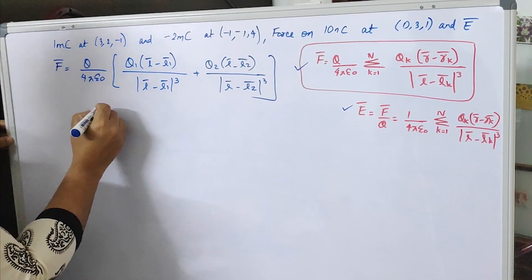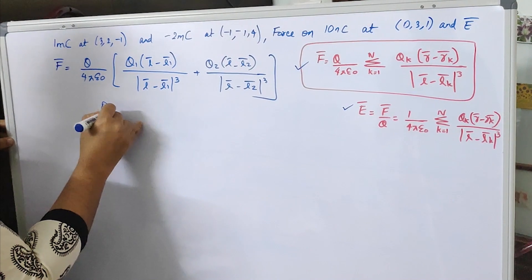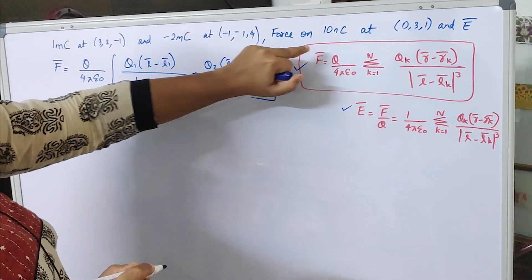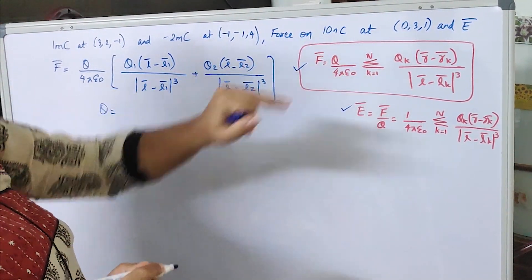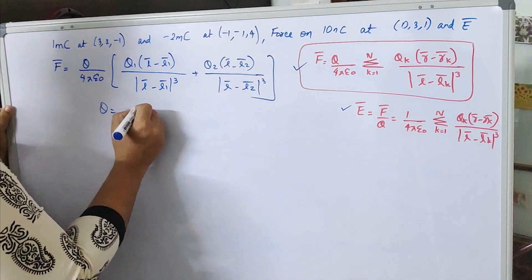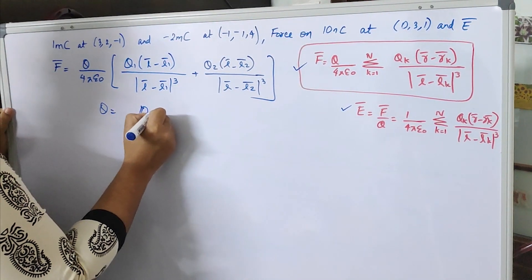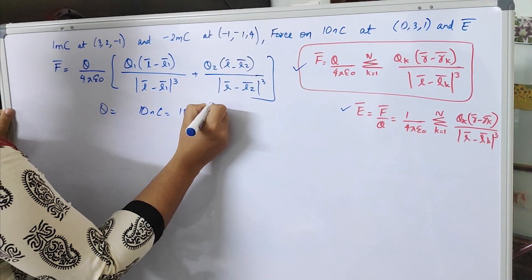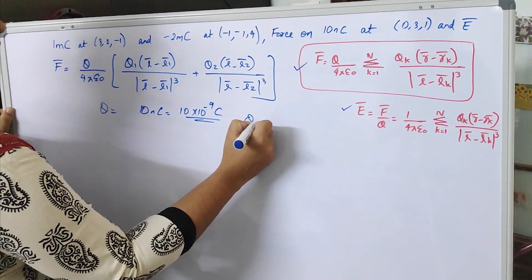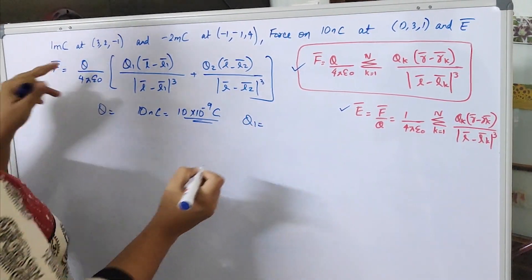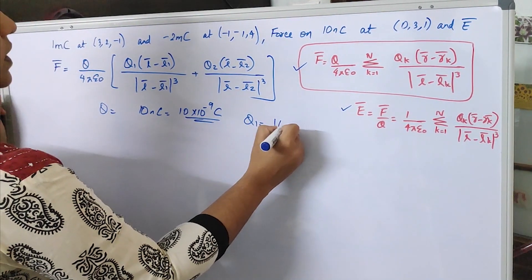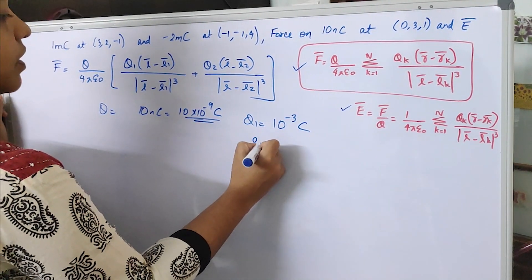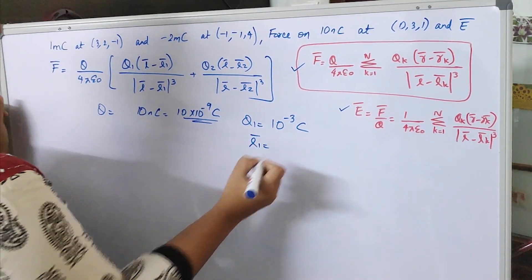On substituting, the main charge q is what we are finding the force on, which is 10 nanocoulomb, equal to 10 times 10 raise to minus 9 coulomb. q1, the first charge, is 1 millicoulomb, that is 10 raise to minus 3 coulomb, and its location r1 is (3, 2, minus 1).